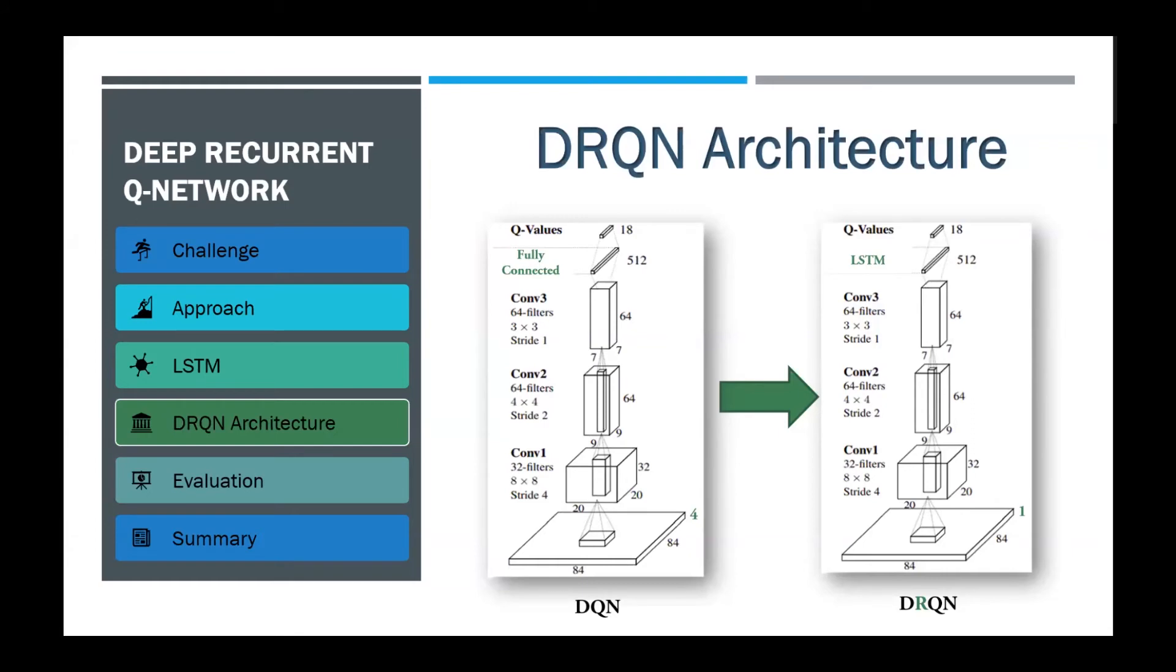In order to test the effects of recurrency, the authors minimally modify the architecture of DQN. The new network, DRQN, now takes a single game screen image instead of four stacked images. Like in the DQN, the images are convolved three times. The results are fed to an LSTM layer with 512 units. Finally, the last layer outputs 18 Q values that represent the 18 actions that can be taken in the Atari game. Here in the figure, you can see the changes from a DQN to a DRQN.